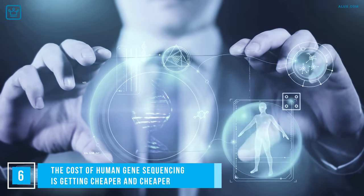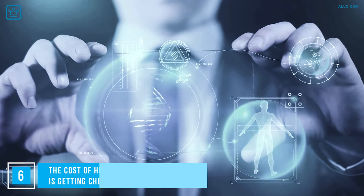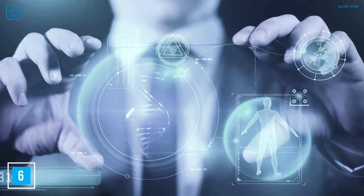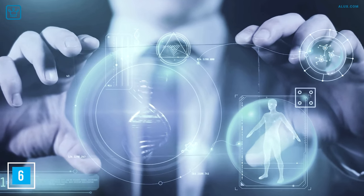Number 6. The cost of human gene sequencing is getting cheaper and cheaper. So this all sounds pretty revolutionary, right? But how do I get my own genome sequenced? Well, an online search will show you it's actually pretty simple.